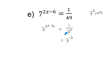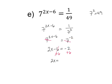My goal is to get the same base as the other side so I can cancel. Now that both sides are base 7, I can cancel. 2x minus 6 comes down and this negative 2 exponent comes down. I add 6 to the other side — 2x comes down, this becomes negative 2 plus 6 which is 4. I divide by 2, and x is equal to 4 divided by 2, which is 2.